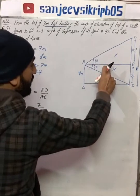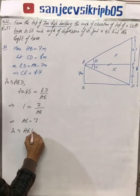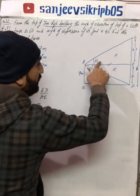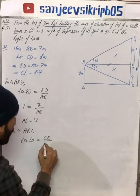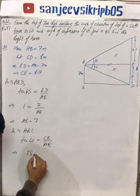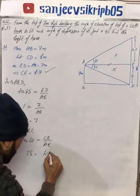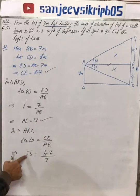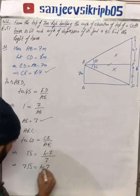Now the second triangle is AEC which has tan 60 degrees. Tan 60 degrees means perpendicular over base, so perpendicular is CE over base AE. Tan 60 value is root 3. CE is H minus 7 and AE is 7. So let's cross multiply it: 7 root 3 equals H minus 7.